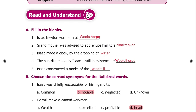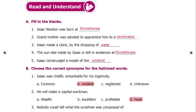Section 1. Fill in the blanks. Isaac Newton was born at Woolsthorpe. His grandmother was advised to apprentice him to a clock maker. Isaac made a clock by the dropping of water. The sundial made by Isaac is still in existence at Woolsthorpe. Isaac constructed a model of a windmill.